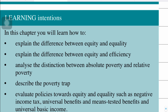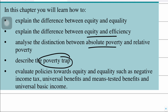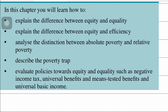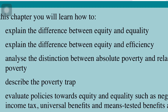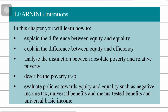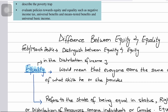For this chapter, you need to know the difference between equity and equality, the distinction between equity and efficiency, and the distinction between absolute poverty and relative poverty. We'll have separate videos on the poverty trap, and on policies toward equity and equality such as negative income tax, universal benefits, means-tested benefits, and universal basic income (UBI). This video will focus on equity versus equality.